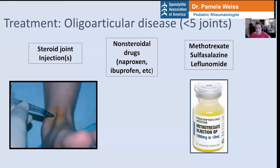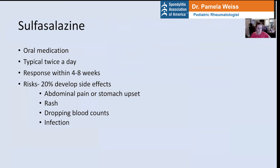Systemic therapy, when repeat joint injections are needed and multiple joints are being added, typically consists of methotrexate, sulfasalazine, or leflunomide. Let me go through each of these systemic medicines in a little more detail so you're familiar with what you might hear in the office.